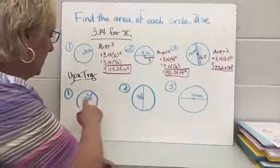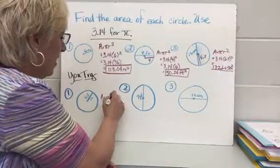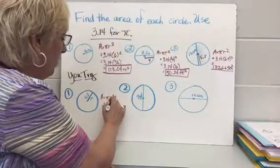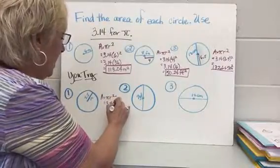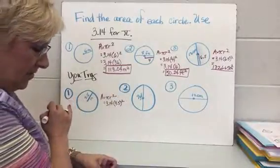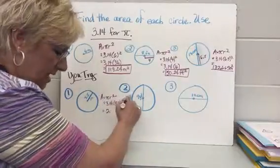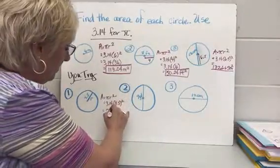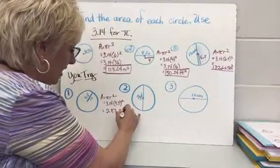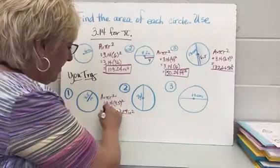This one has a radius of 9.4, so area equals pi r squared: 3.14 times 9.4 squared. When I put that all in my calculator, it's going to be 283.385 inches squared.